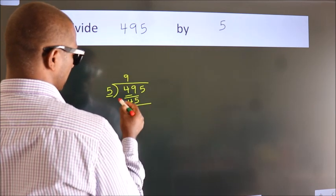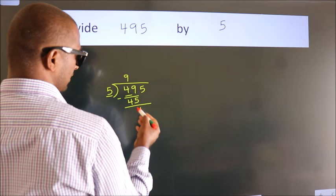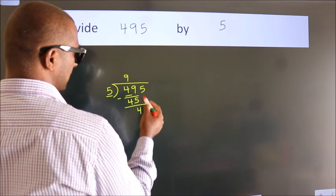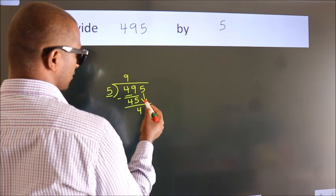Now we should subtract. We get 4. After this, bring down the beside number. So 5 down.